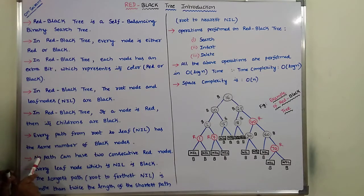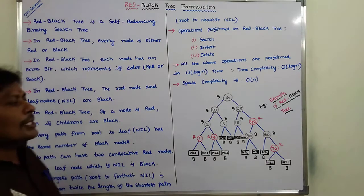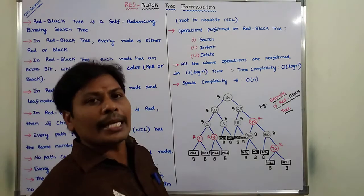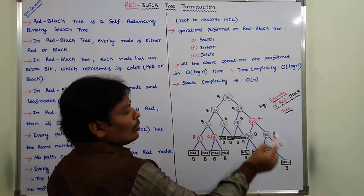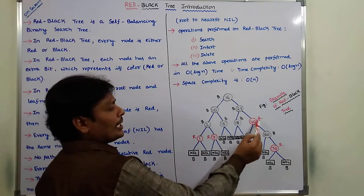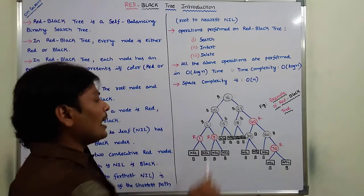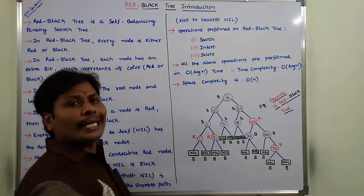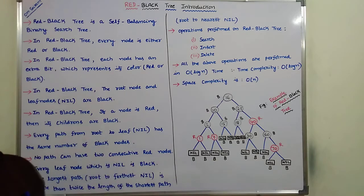No path can have 2 consecutive red nodes. Checking every path, no path contains 2 consecutive red nodes. If a red node is present, the next node is a black node. If 2 consecutive red nodes exist in any path, it violates the property of the red-black tree.